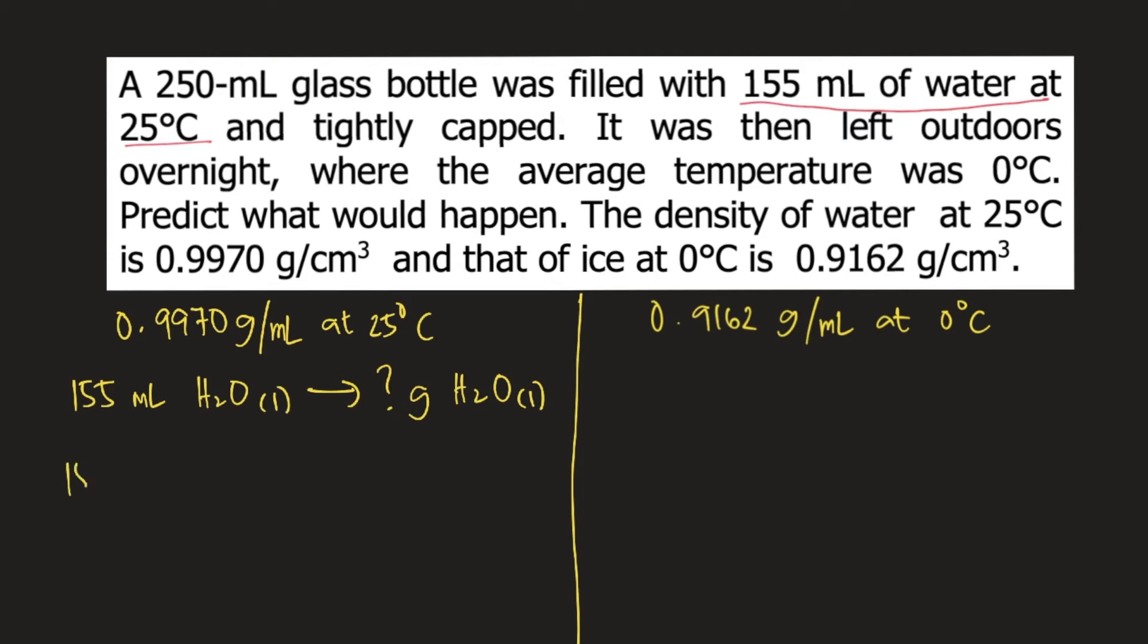So we have 155 ml, and according to the density at 25 degrees Celsius, 1 ml weighs 0.9970 grams. So ml would cancel and we have grams on top. And if you solve this, this is equal to 154.535 grams.